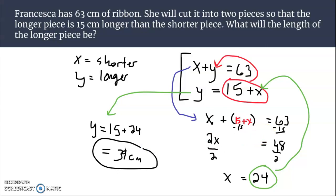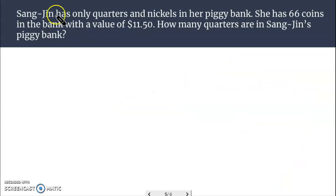Now this next one has to do with money. Sang-Jin has only quarters and nickels in her piggy bank. She has 66 coins in the bank with a value of $11.50. How many quarters are in Sang-Jin's piggy bank? So let's identify some variables here. Let's have Q for number of quarters. And N will be the number of nickels.